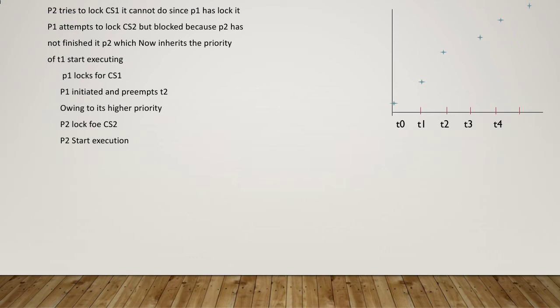P2 now inherits the priority of P1 and starts execution. P1 logs for CS1 and P1 initiates, preempting T2 and owning its priority. You can check with the graph. P2 locks CS2 and P2 starts execution.